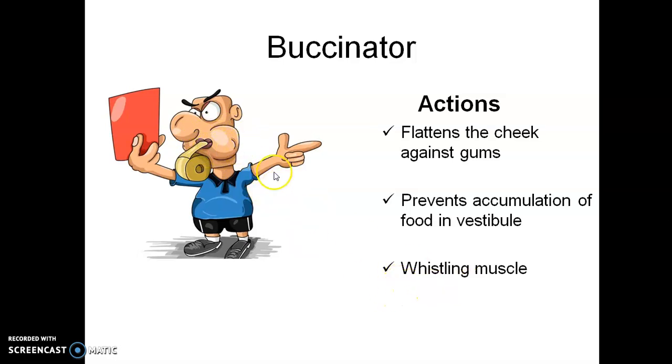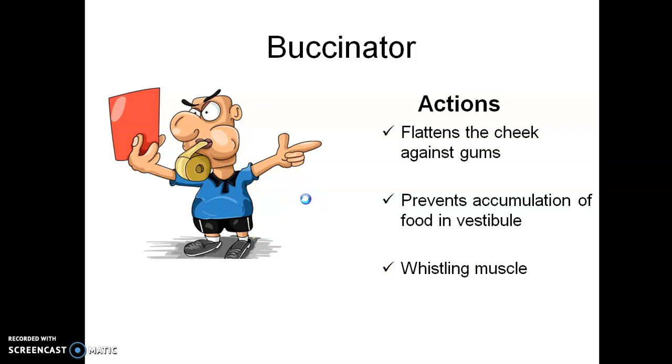And obviously, you know this, it helps in whistling. Additional action is, it is also helping this movement, that is blowing. So it is also called blowing muscle or the whistling muscle.